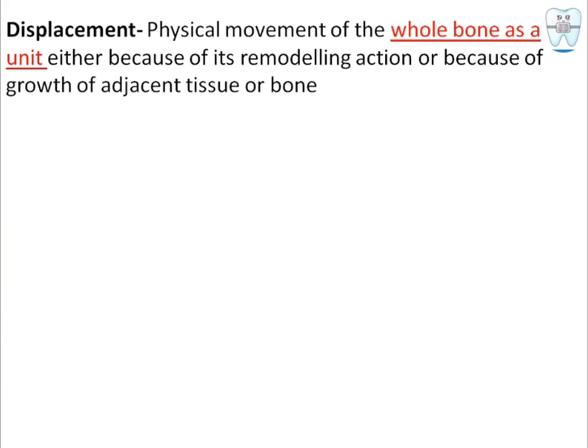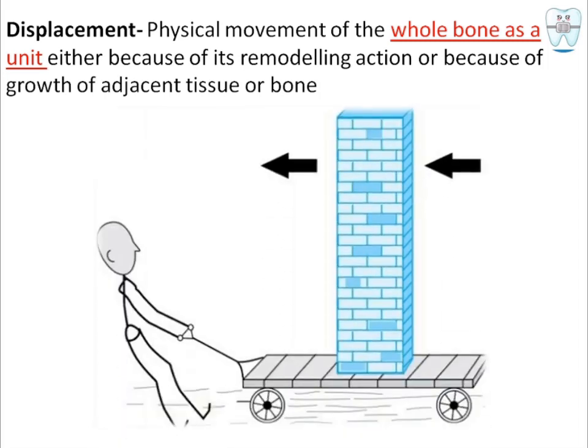Displacement is the physical movement of a whole bone as a unit, either because of its own remodeling action or because of the growth of adjacent tissue or bone. This is full bone movement — caused either by a remodeling action or by the growth of adjacent tissues and bones.